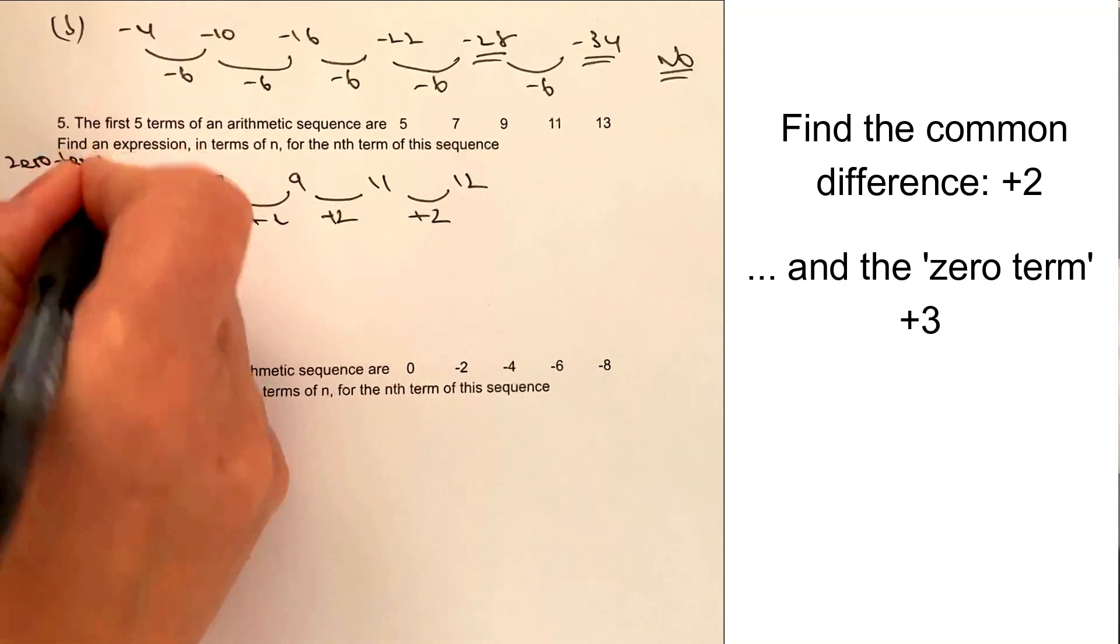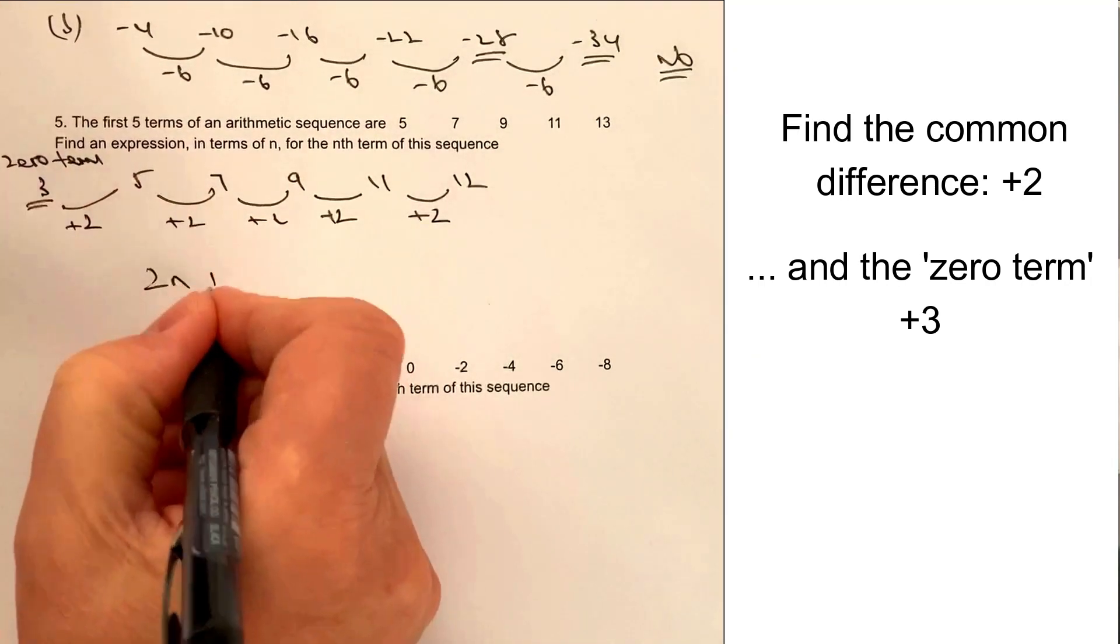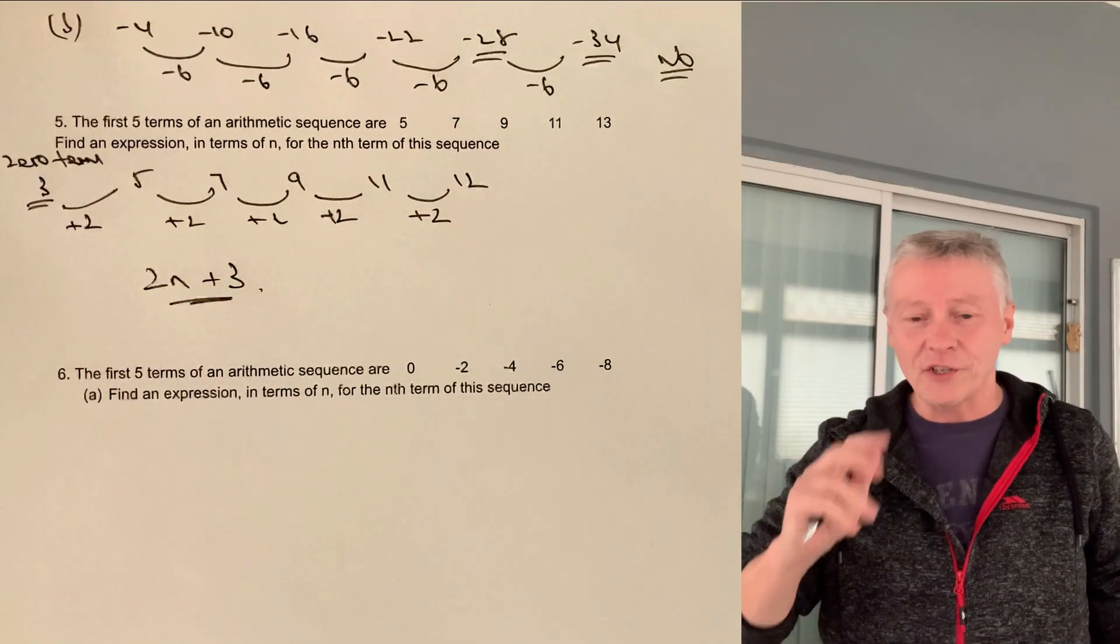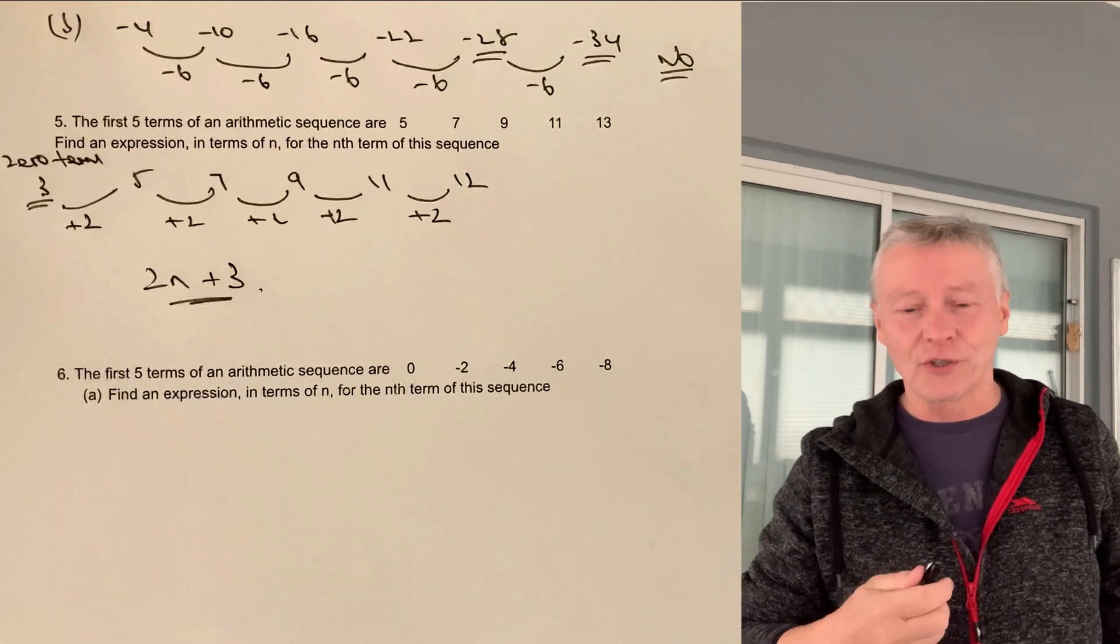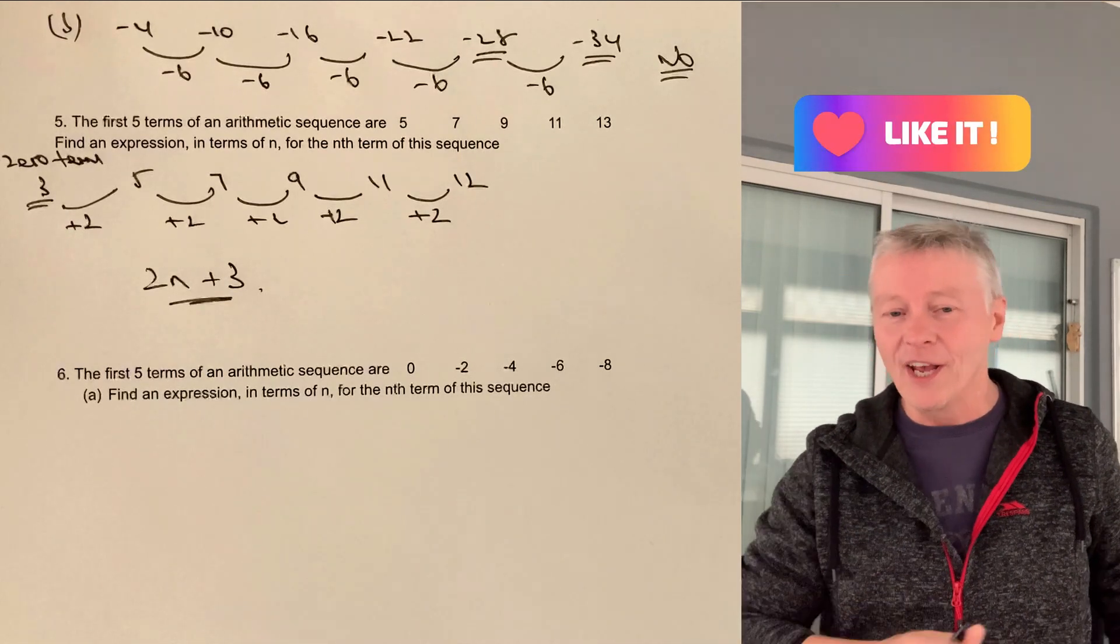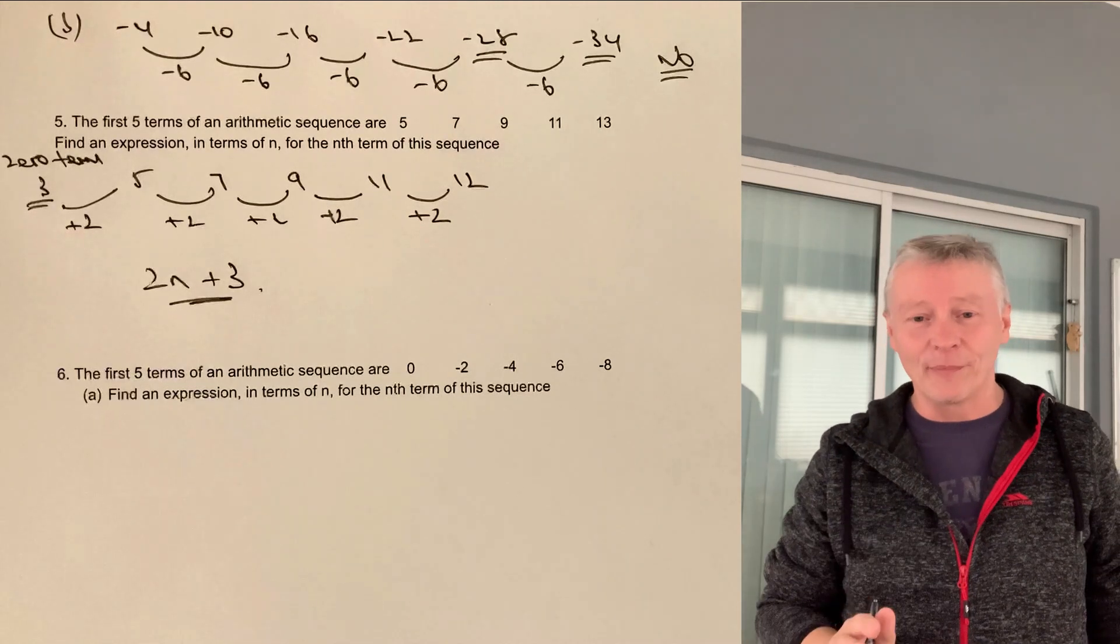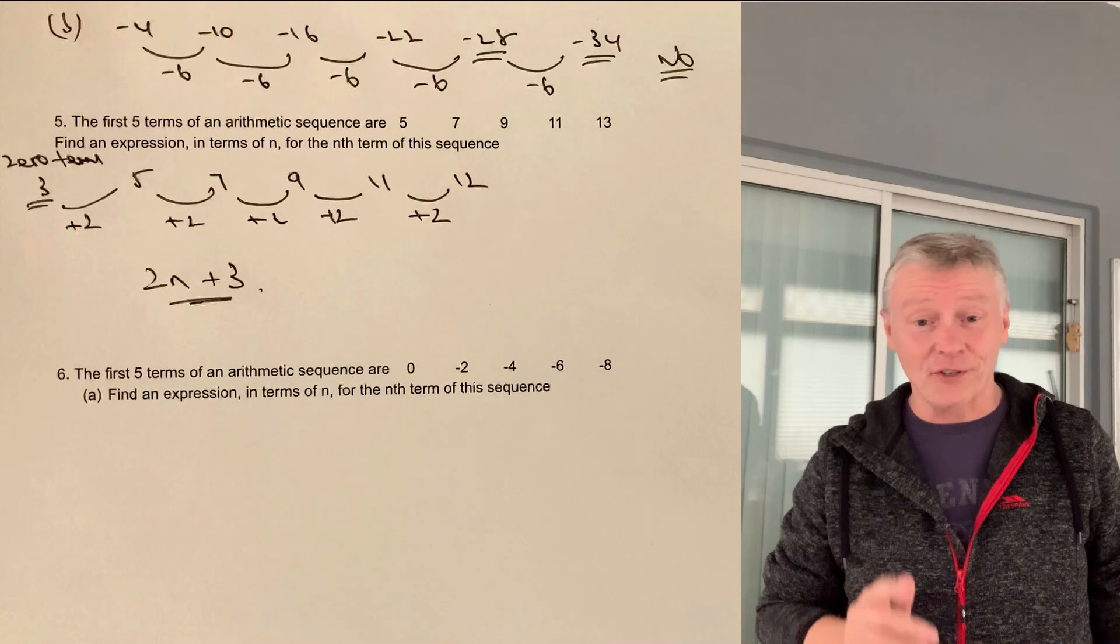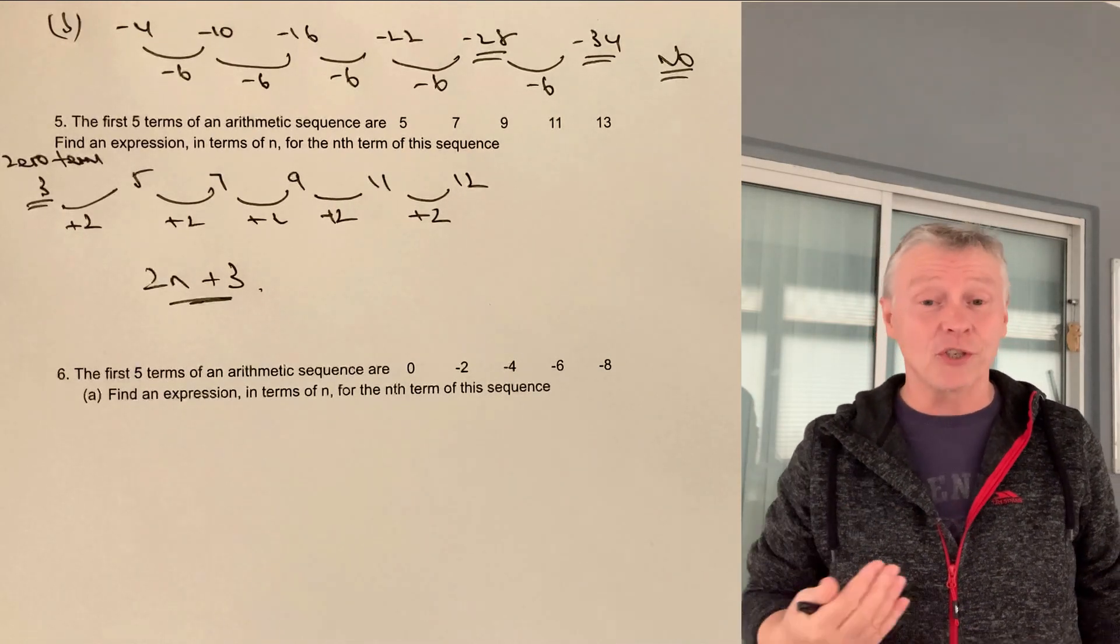And then we have something called the 0 term. Now, the 0 term is 2 below, which is going to be 3. So it's 2n plus 3, and that's the answer to the question. All you need to know is two things. You need to know the common difference, which in this case is 2, and also the 0 term, which in this particular case is plus 3. We can apply that with the last question as well, and any other arithmetic or common difference sequence. Please do visit 3minutemaths.co.uk. That'll give you some more worksheets and some more ideas with these sorts of questions.